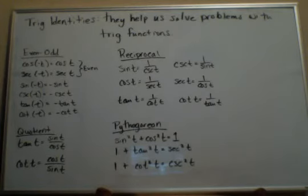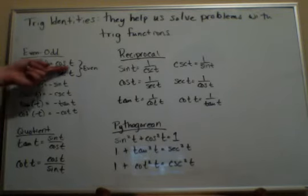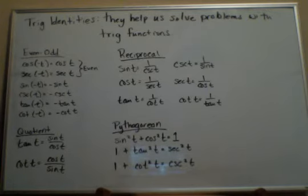Okay, so they're broken up into four categories. We'll start over here with the even-odd identities. So this has to do with whether or not functions are what we consider even or odd, which has to do a little bit with their symmetry. So what we'll notice is that the cosine of a negative angle is the same as just the cosine of a positive angle. Or for instance, the cosine of 30 degrees is the same as the cosine of negative 30 degrees. Okay? And then the same goes for secant.